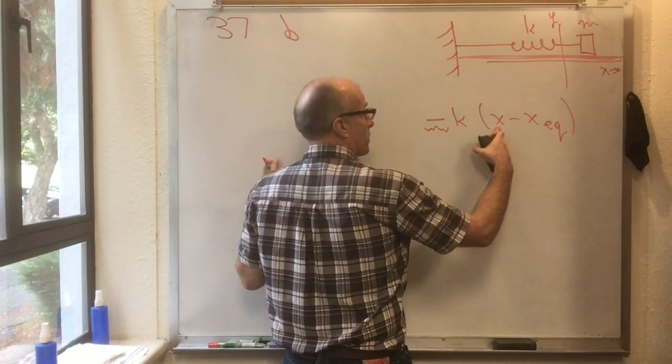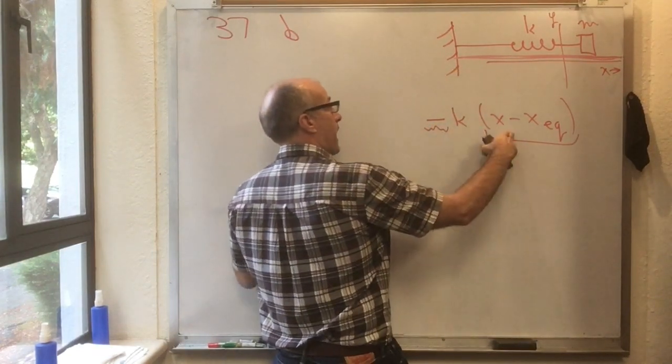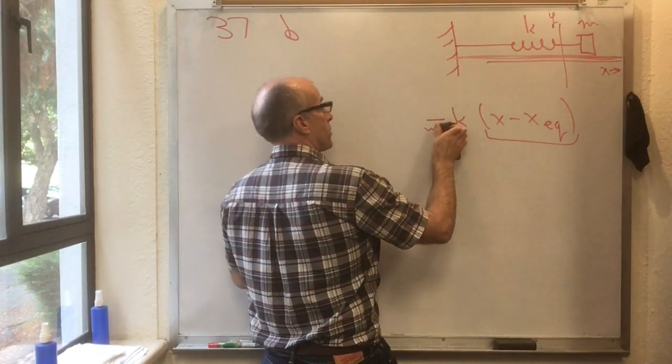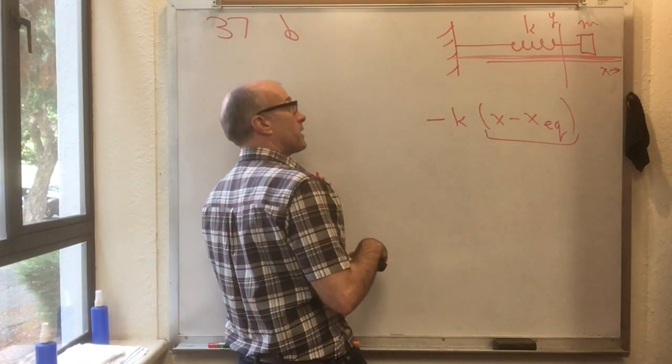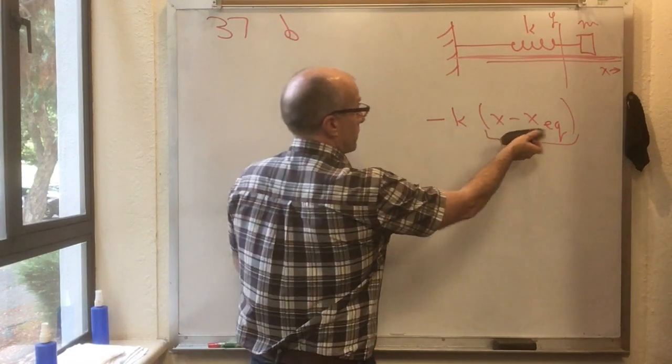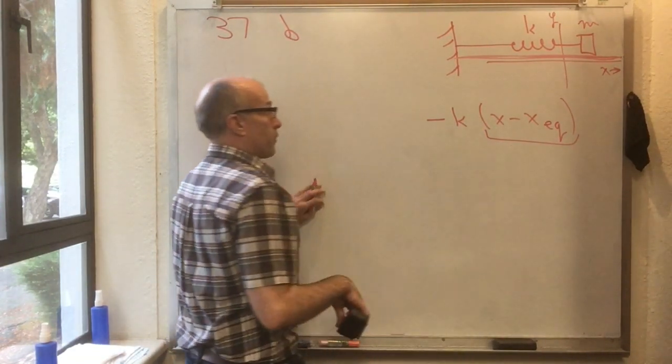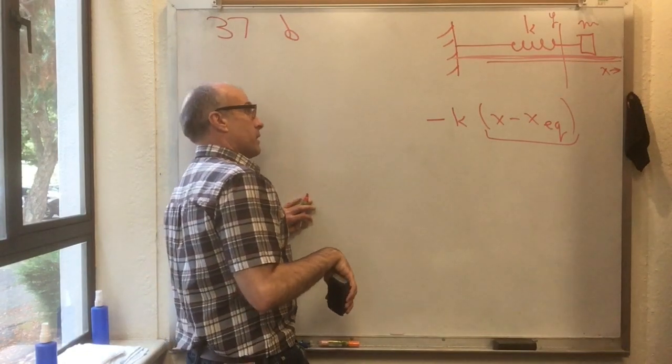And if it's to the left of its equilibrium point, which would mean this was a negative number, when you multiply that negative number by this negative number, you get a positive number which means that the spring is pushing right. So either way, whether it's extended or compressed, there's the formula for the force supplied by this spring on this mass.